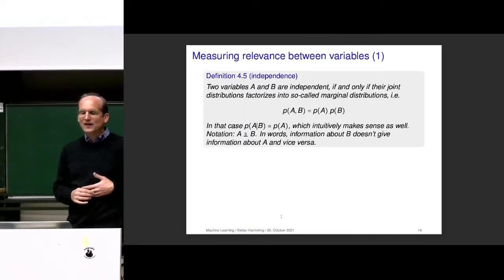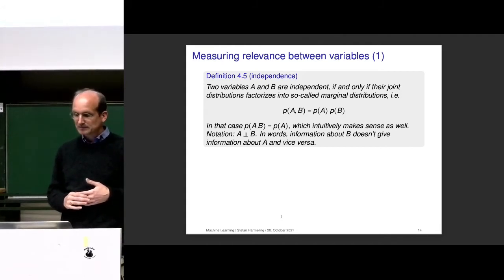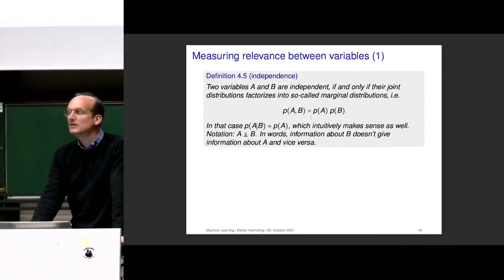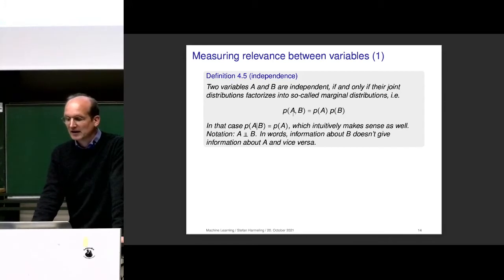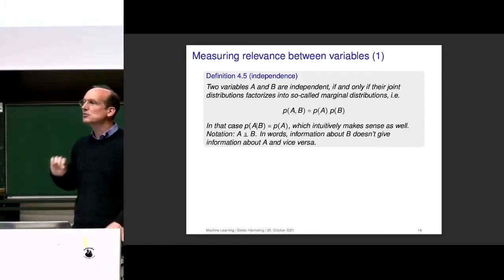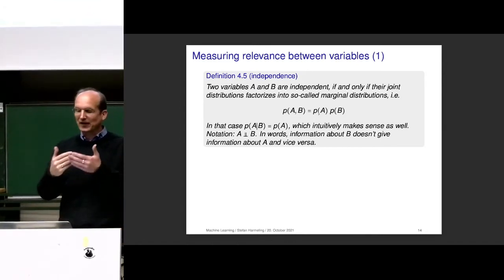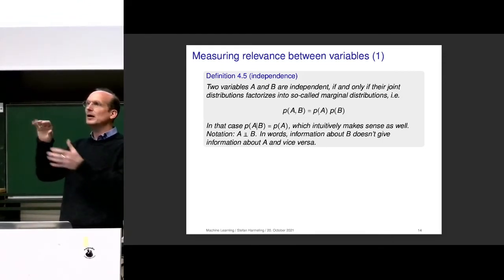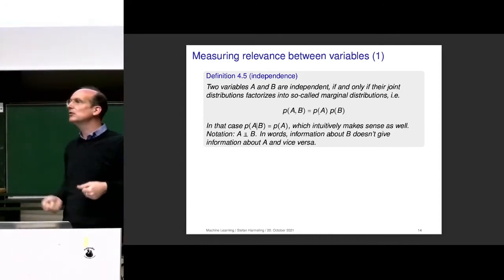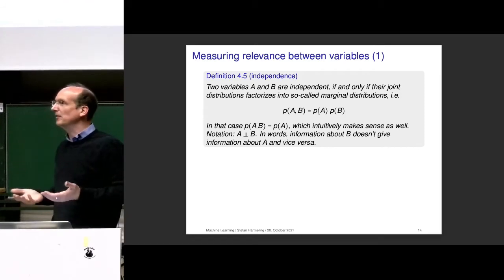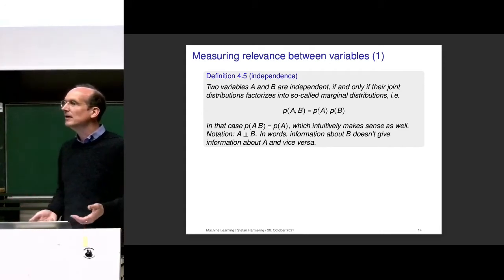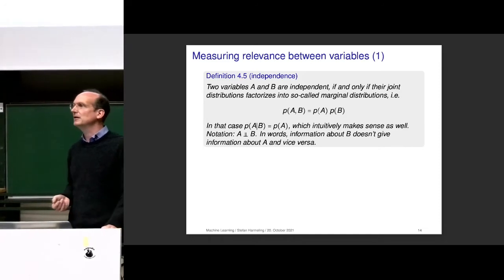Towards that, let's first define what independence means between two variables — something you might have seen before. Two random variables A and B are independent if their joint distribution factorizes. When I write it like this, I'm using shorthand notation: P(A=1, B=1) equals something, and this should hold for all value combinations. It could be that there are some weird probability distributions where you have dependencies depending on the values — that's beyond our graphical model notation — but here we have this simple case.